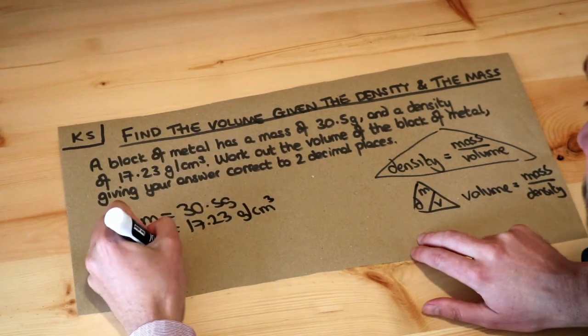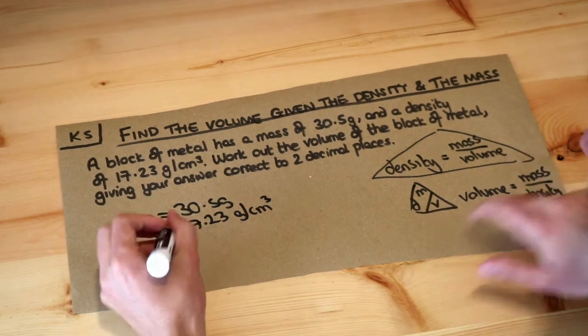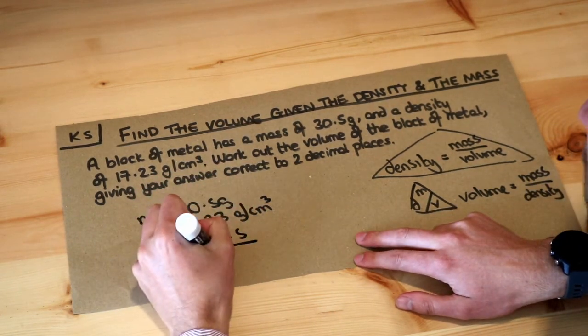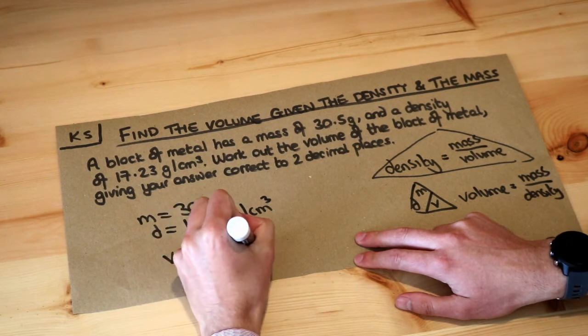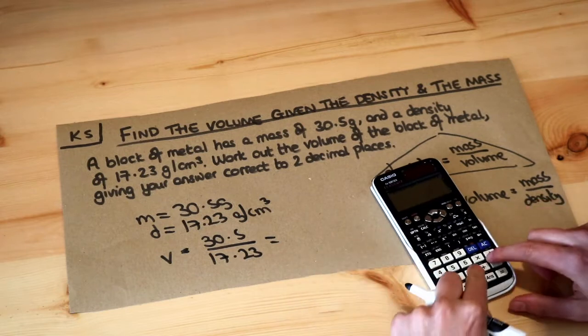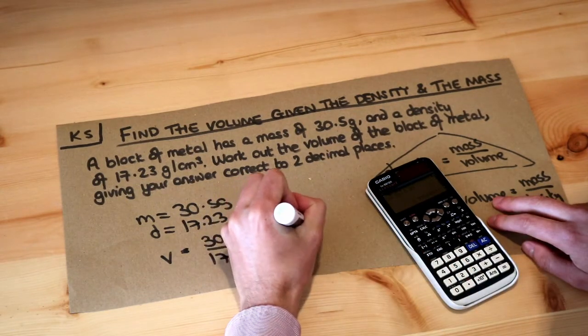And therefore the volume is equal to the mass over the density, which is the mass of 30.5 divided by the density, which is 17.23. And if I put that on my calculator, because I certainly cannot do that in my head, you get 1.77.